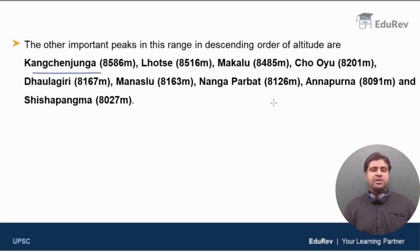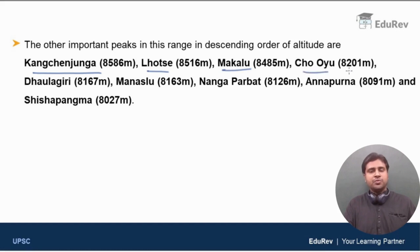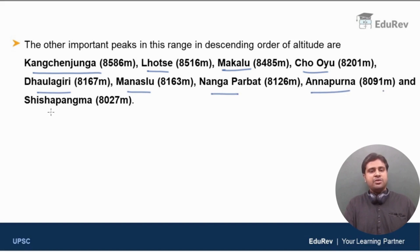The second highest mountain is Mount K2, which is in the Karakoram range of Trans-Himalayas, which we will discuss next. Mount Kangchenjunga has an elevation of 8586 meters. Next, Mount Lhotse at 8516 meters, Makalu at 8485 meters, Cho Oyu at 8201 meters, Dhaulagiri at 8167 meters, Manaslu at 8163 meters, Nanga Parbat at 8126 meters, Annapurna at 8091 meters, and Shishapangma at 8027 meters.